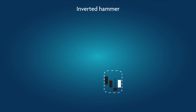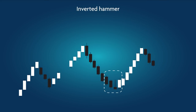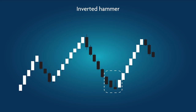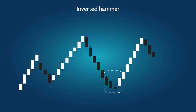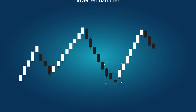Inverted Hammer: a bullish pattern created when a dropping stock reverses its pattern briefly and rises but returns to the bottom at the end of the candle's time interval, leaving a topping tail. The strong buying pressure at the outset indicates the beginning of the end of seller control.